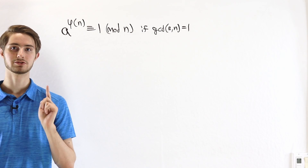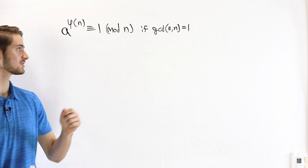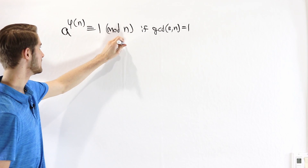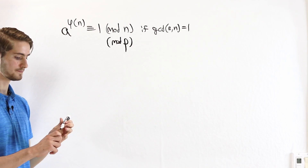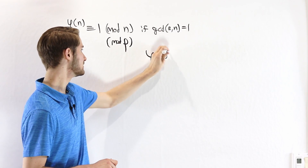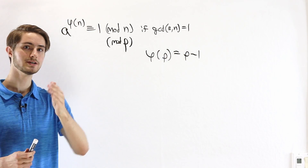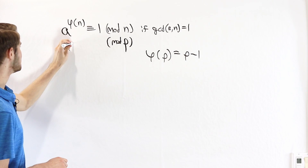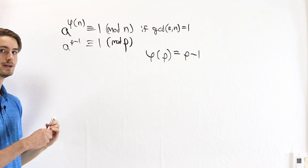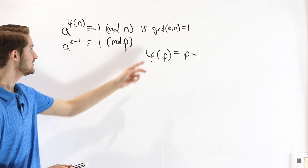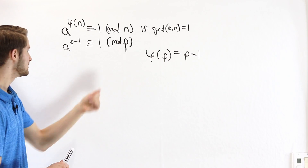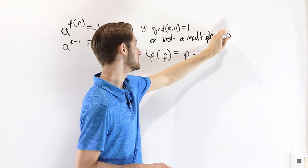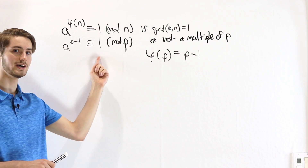Now we're going to look at Fermat's Little Theorem. Fermat's Little Theorem is actually a special case of Euler's Totient Theorem for when n is a prime number p. The totient of a prime p is equal to p−1, because every number less than p is coprime to p. So in the exponent we get p−1: a^{p−1} ≡ 1 mod p, which is true whenever a is coprime to p. Since p is prime, that just means a is not a multiple of p.